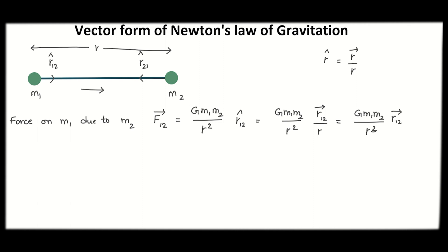Similarly, we can find the force on m2 due to m1. The magnitude is Gm1 m2 by r squared — the same as before. The magnitude doesn't change because we already know that the two masses exert equal forces on each other.